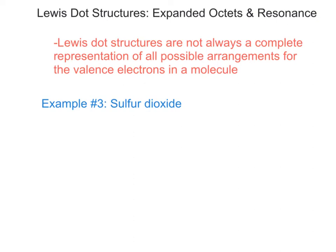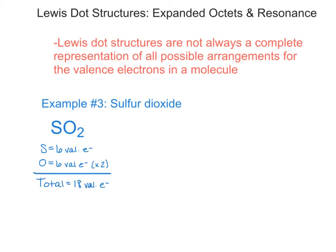The final topic of this video lesson is resonance structures. Lewis dot structures are not always a complete representation of all possible arrangements for the valence electrons in a molecule. To understand what I mean, let's look at sulfur dioxide, SO2. Sulfur has six valence electrons and each oxygen also has six valence electrons, for a total of 18 valence electrons. When I draw the Lewis dot structure, I have sulfur singly bonded to one oxygen and doubly bonded to the other — that's the only way to make all atoms have eight valence electrons.